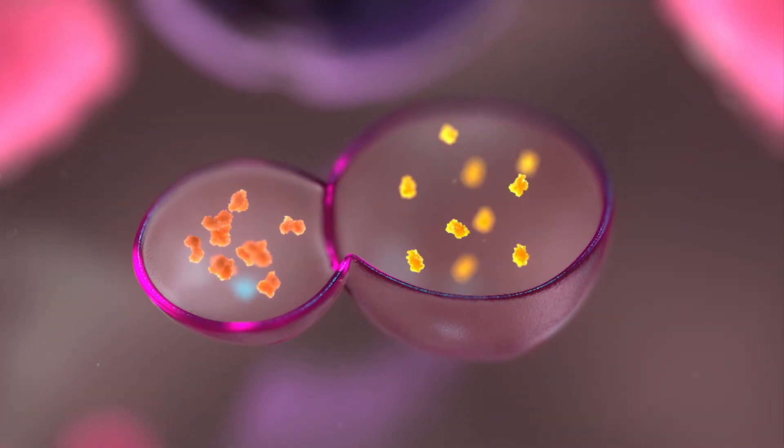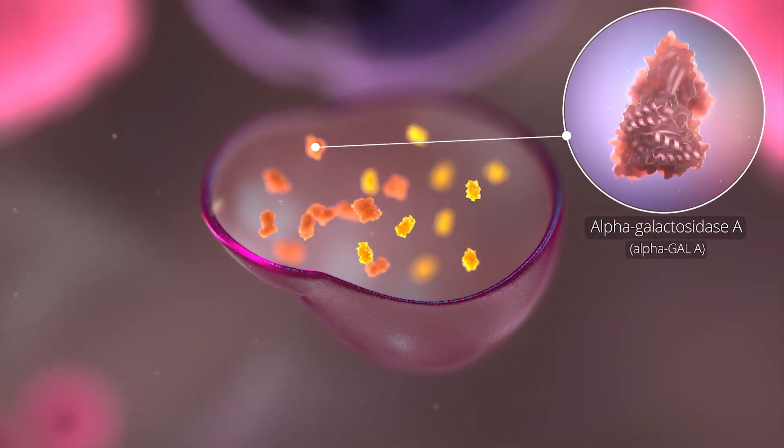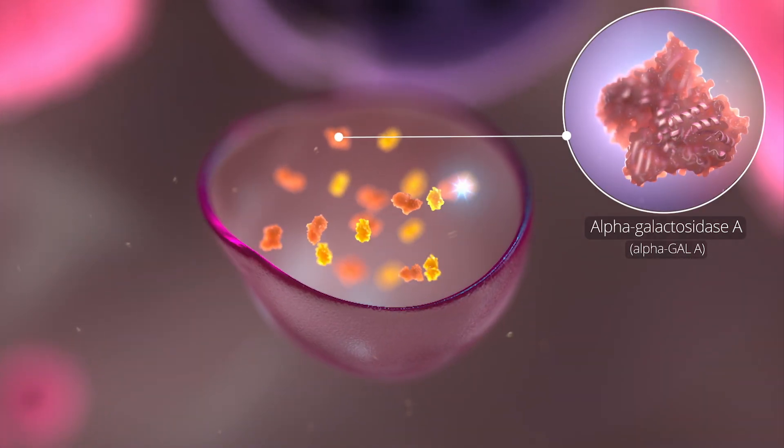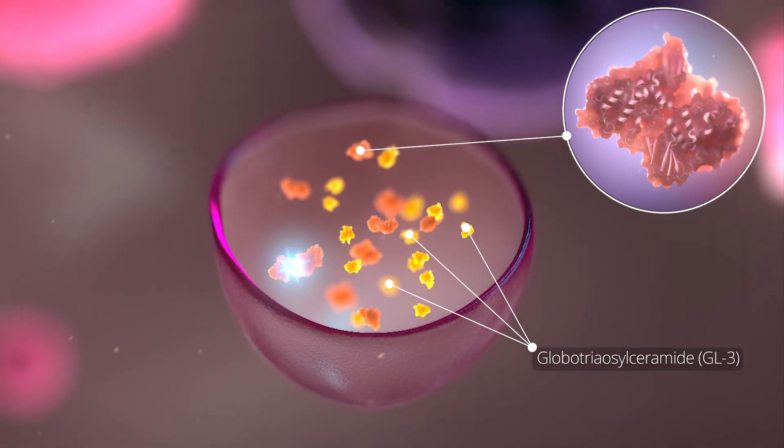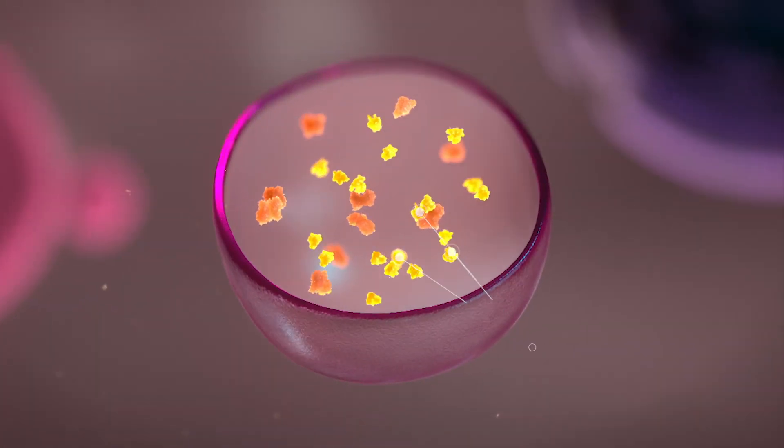Normally, the enzyme alpha-galactosidase A or alpha-gal-A breaks down a fatty substance called globotriaosylceramide or GL3.